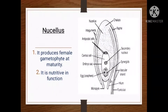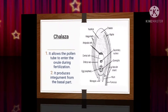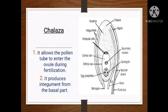The functions of nucellus: it provides the female gametophyte at maturity and is nutritive in function. The function of chalaza: it allows the pollen tube to enter the ovule during fertilization. Whenever the pollen tube enters the ovule through the chalaza, that is known as chalazogamy — for example, in walnut. This type of chalazogamy takes place in such plants. Additionally, the chalaza produces integuments from the basal part.